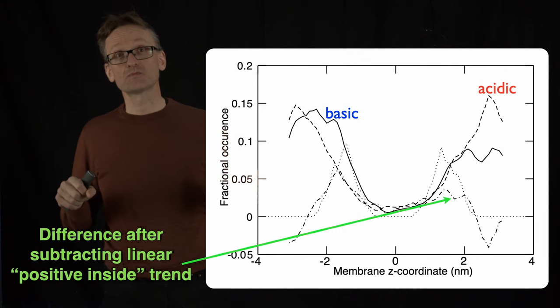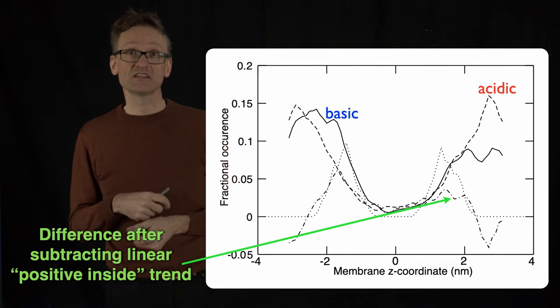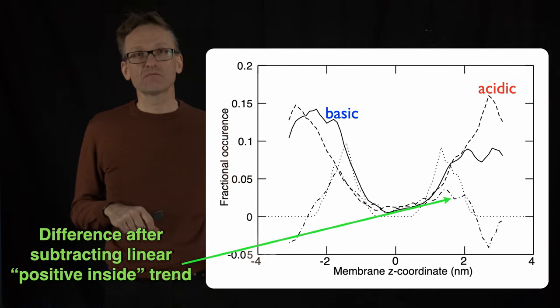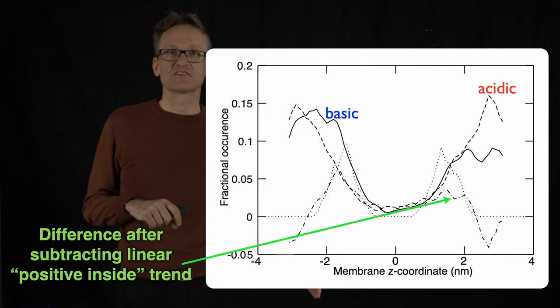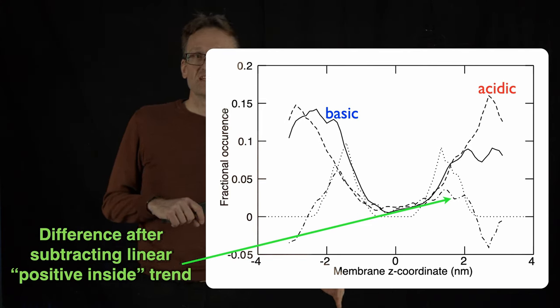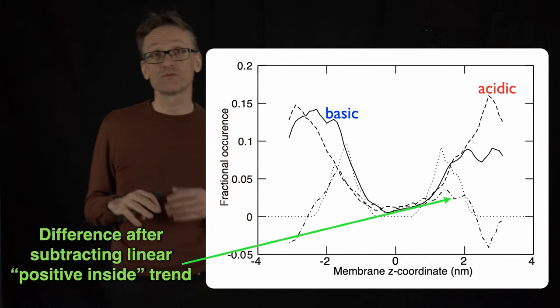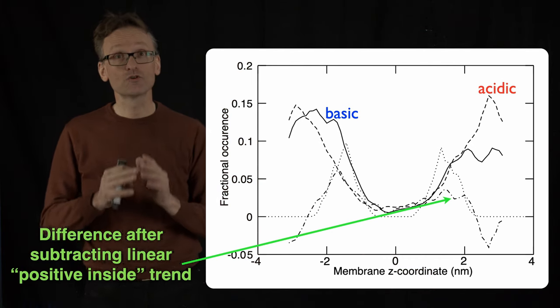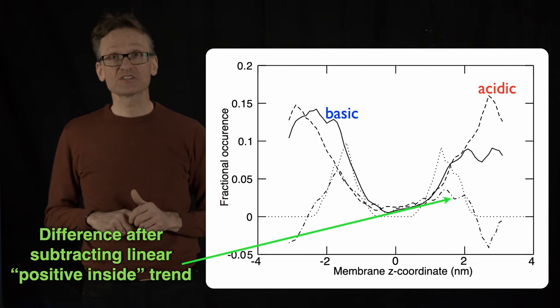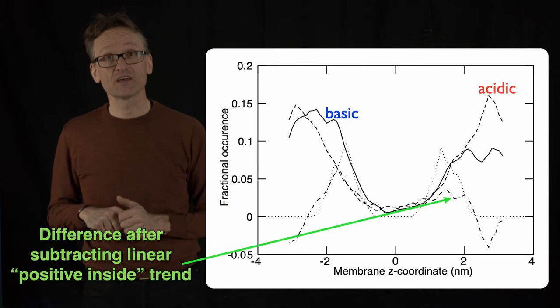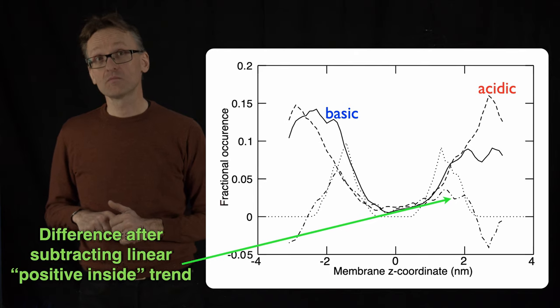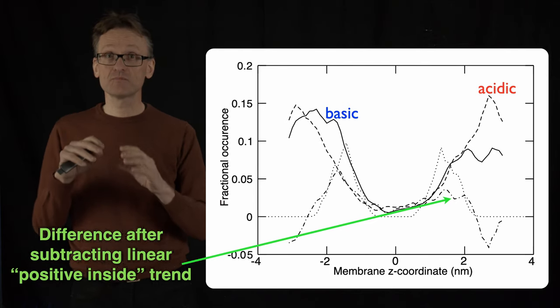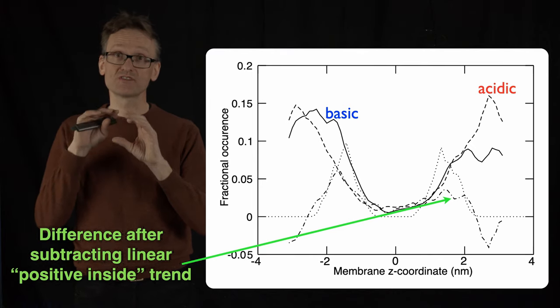But then we can subtract the overall trend, the difference between positive and negative ones, and see once we've removed that where they occur. And then you see a pretty fun peak. You have an excess concentration of these charged amino acids, both charges, in the head group regions. So charges actually prefer to interact with the head group regions over water, partly because there are so many other charges in head group regions. The lipid head groups are more charged than the water molecules.